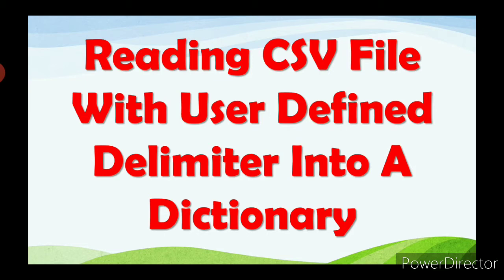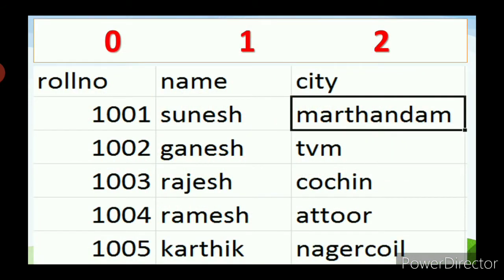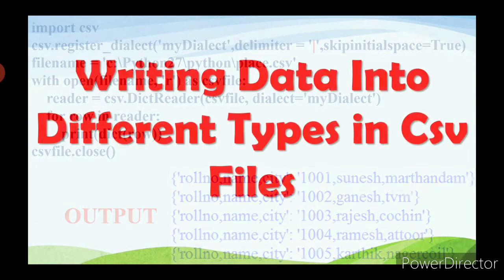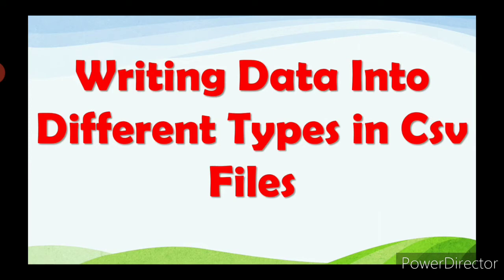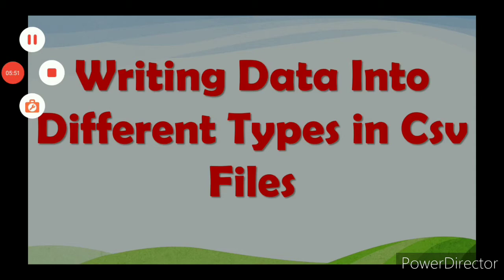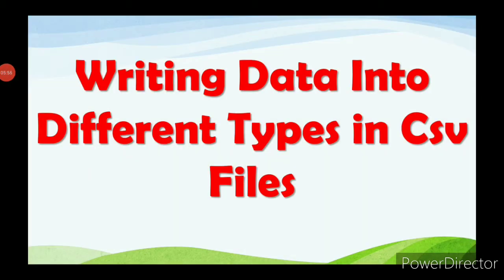The next topic is reading a CSV file with a user-defined delimiter into a dictionary. Delimiter means special characters. You can also register new dialects and use them in the dictionary reader method. Suppose sample_8.csv is in the following format. A dialect is the format of a CSV file which we need to read — it is nothing but the format we give to the file we want to read.